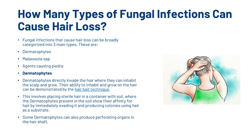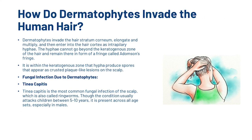Some dermatophytes can also produce perforating organs in the hair shaft. Dermatophytes invade the hair stratum corneum, elongate and multiply, then enter into the hair cortex as intrapillary hyphae. The hyphae cannot go beyond the keratogenous zone of the hair and remain there in the form of a fringe called Adamson's fringe. It is within the keratogenous zone that hyphae produce spores that appear as crusted plaque-like lesions on the scalp.